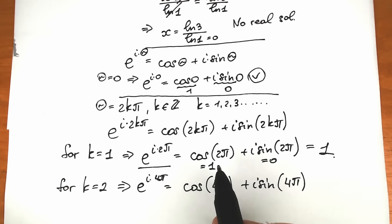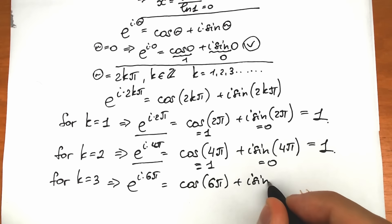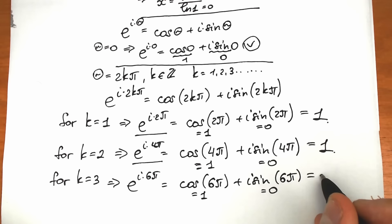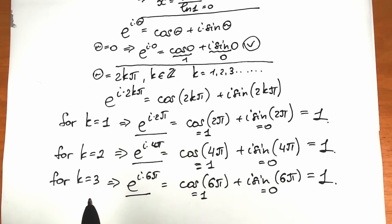Let's check k equal to 3: e to the power i times 6pi equals cosine 6pi plus i sine 6pi. Cosine 6pi equals 1 and sine 6pi equals 0, so once again the expression equals 1. As you can see, for k equal to 1, 2, 3, 4, and so on — every time this left side expression equals 1.